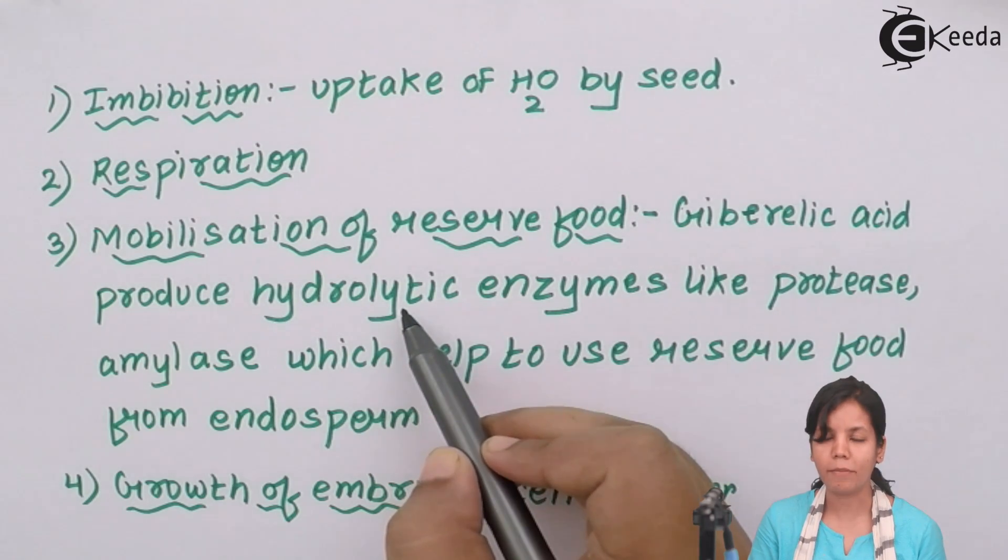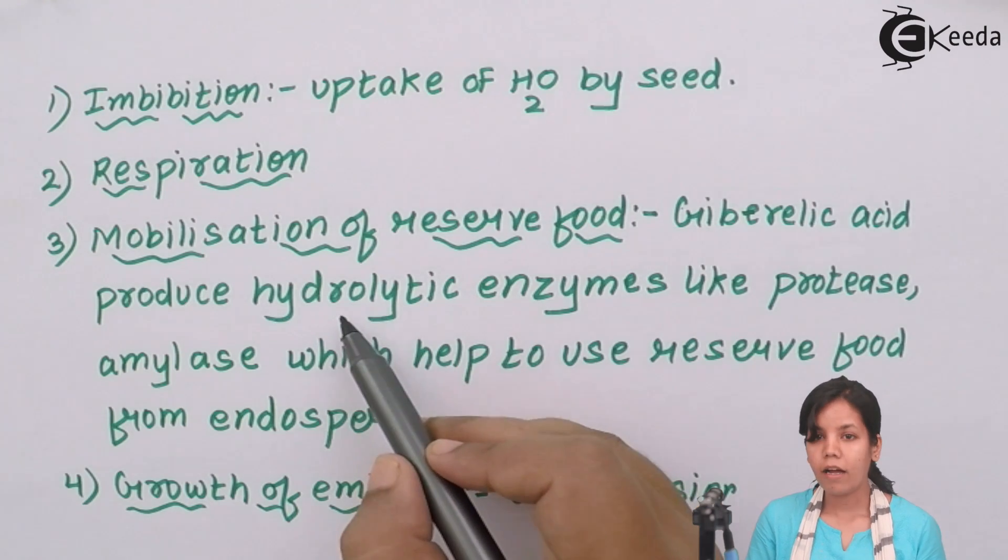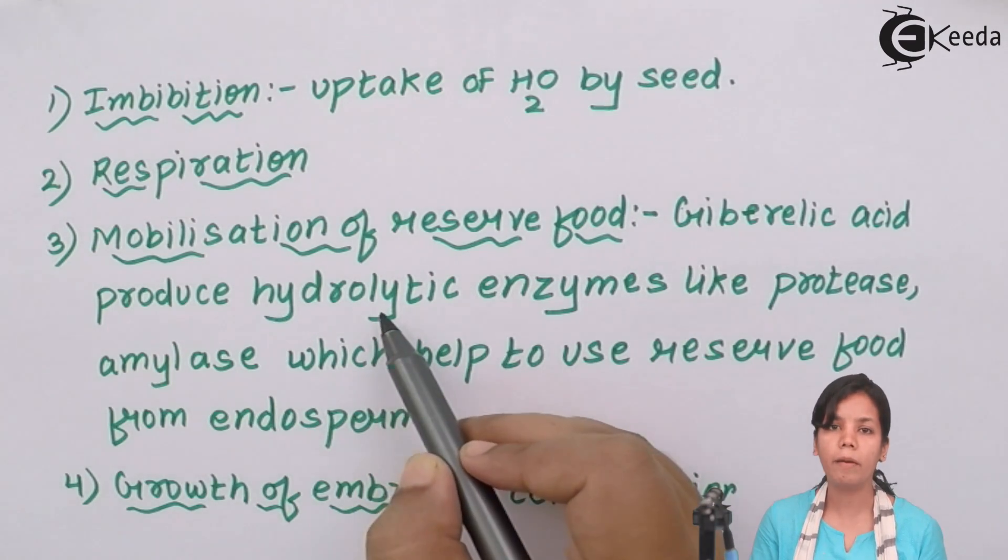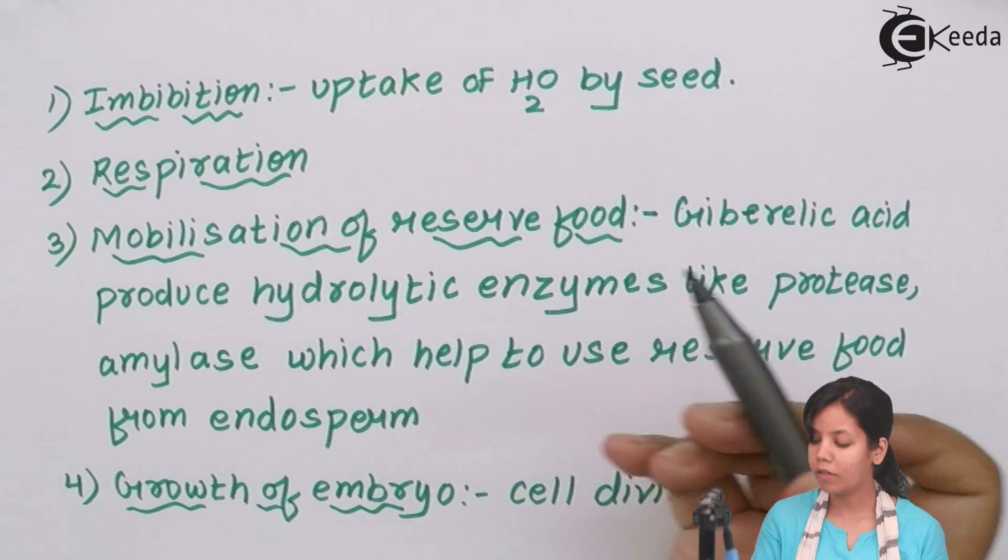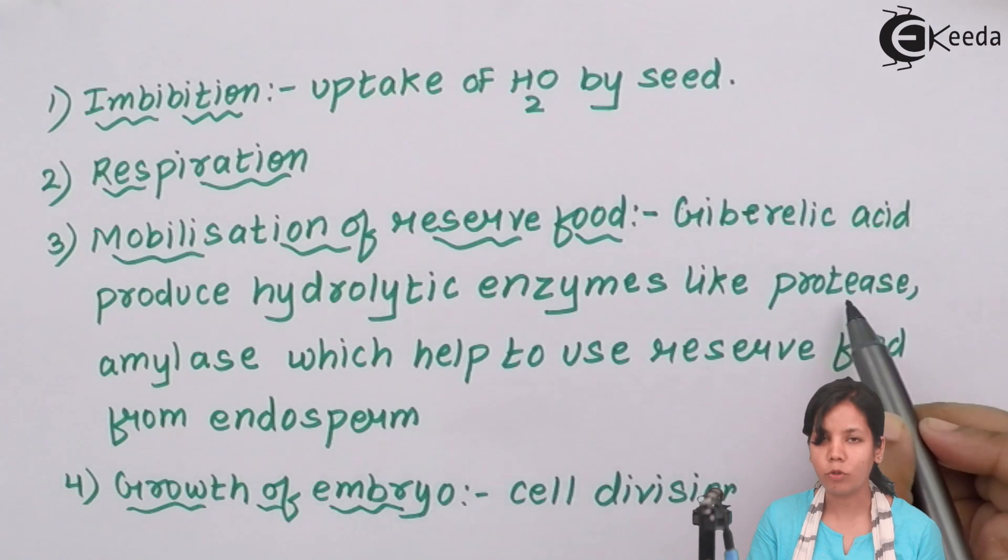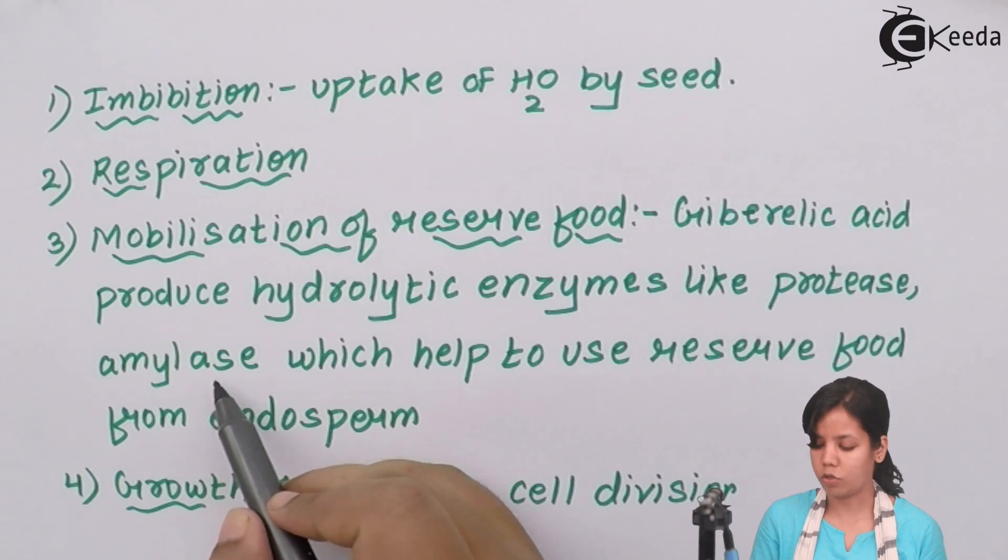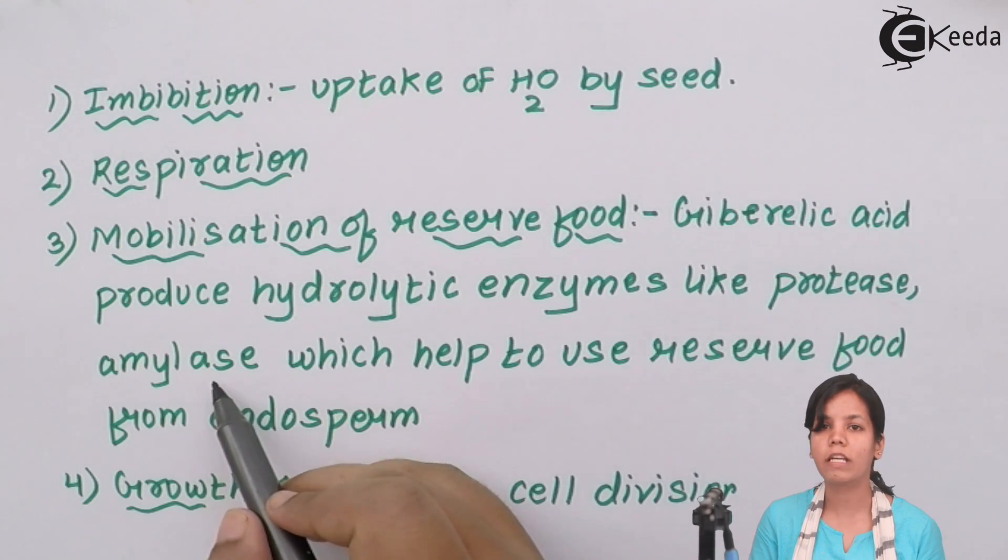When I say hydrolytic enzymes it means enzymes which help in breakdown of sugar or help in the formation of sugar. And the hydrolytic enzymes produced are proteases that help to use protein, amylases that help to use starch. All these enzymes are responsible for uptake of glucose in food.